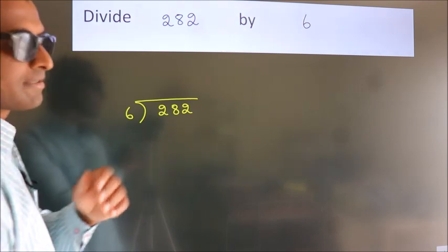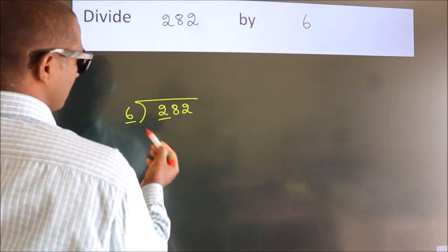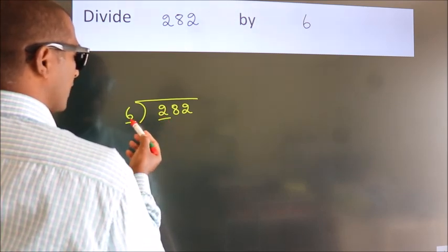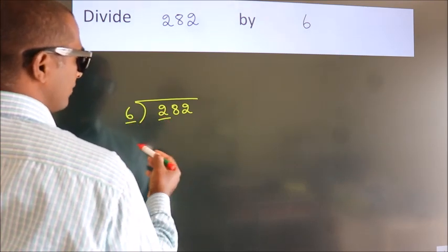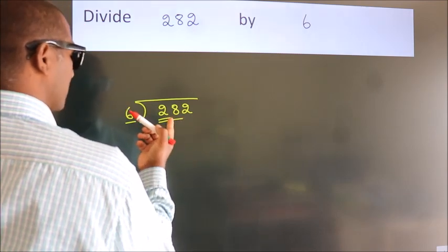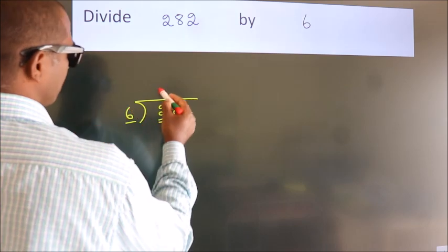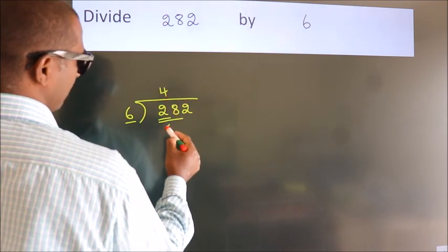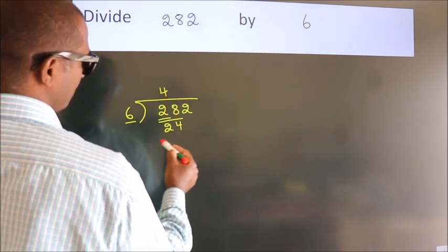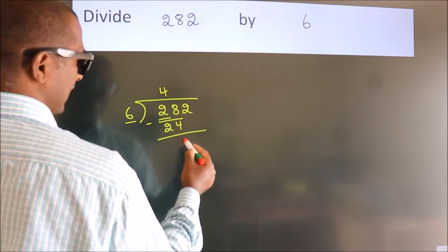Next. Here we have 2. Here 6. 2 is smaller than 6, so we should take 2 numbers. 28. A number close to 28 in the 6 table is 6 fours is 24. Now we should subtract. We get 4.